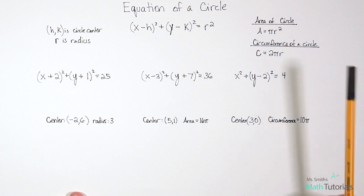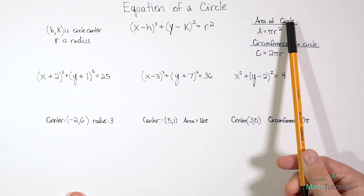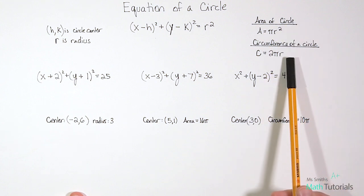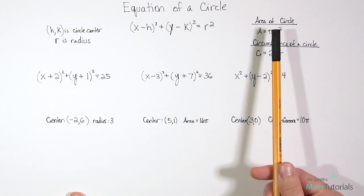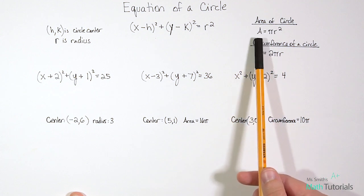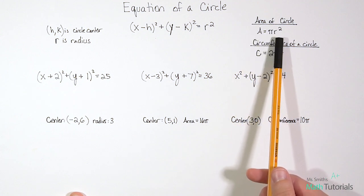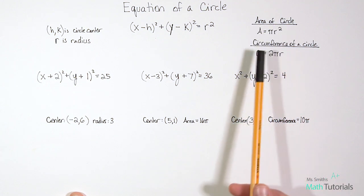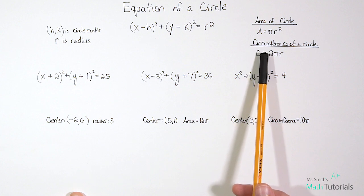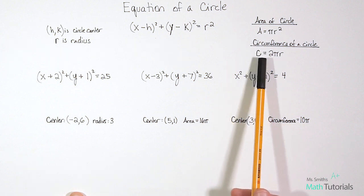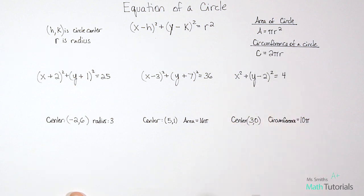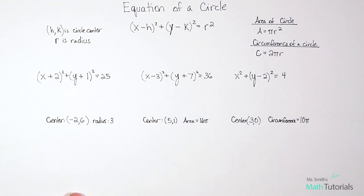I've also got two good reminders of formulas to remember. Area of a circle is A = πr². And circumference of a circle is C = 2πr. Just good information when we get down to some of these later examples.